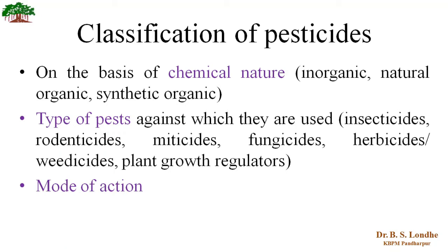Another method of classification of pesticides is the type of pest against which they are used. Depending on this type of classification, we can classify pesticides as insecticides, rodenticides, miticides, fungicides, herbicides or weedicides, plant growth regulators, etc.